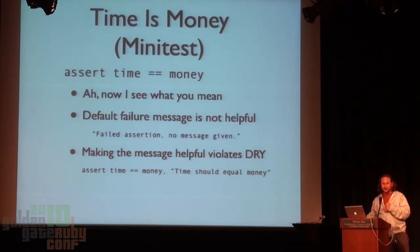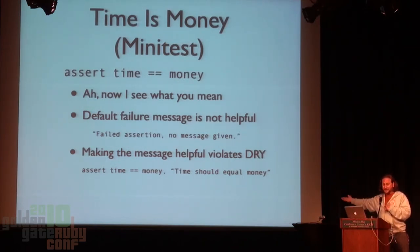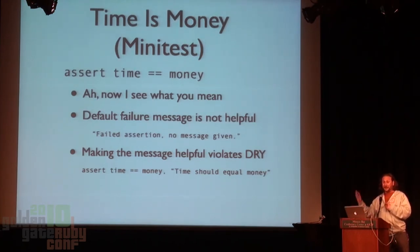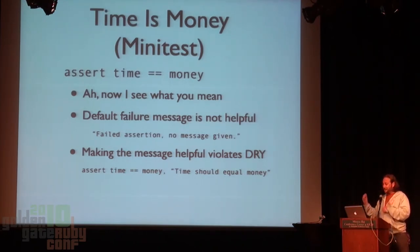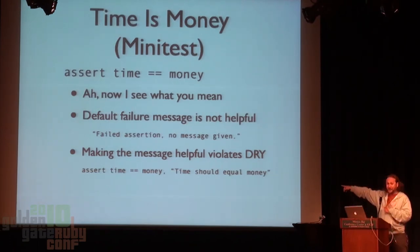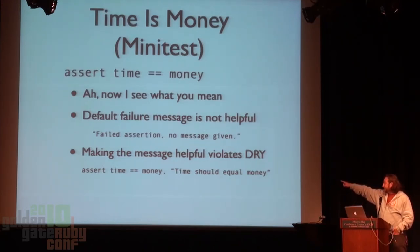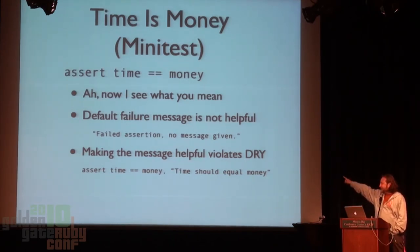Minitest is getting closer because it sort of revived assert. However, the failure message for assert in this case is not helpful — it just says it failed. And if you're lucky you've passed the trace rate so you get to see the line number. Also, if you want to make the message more clear, you have to violate DRY. Assert time equals money — there's 'time should equal money', which is useful, but you've repeated time, money, and equals. So, what do we do? We turn assert back into something that can introspect the code that you are asserting about. It actually looks inside the block of code and makes a useful message out of the code you already wrote, so you don't have to write it again.